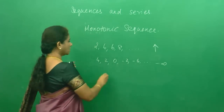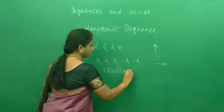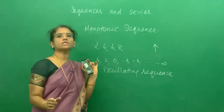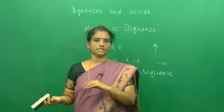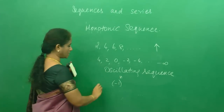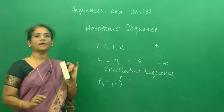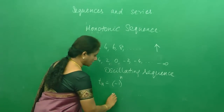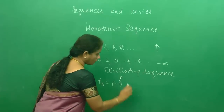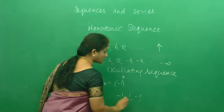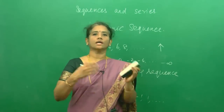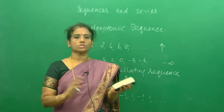Next we have one more type — the oscillating sequence. Oscillating means it goes this side and that side. Suppose if I consider the sequence with nth term equal to (-1)^n. When n is 1, this is -1. When n is 2, it is 1. When n is 3, it is -1. When n is 4, it is 1, and it goes on. So you cannot conclude whether this sequence converges or diverges because it is oscillating.